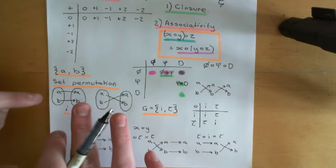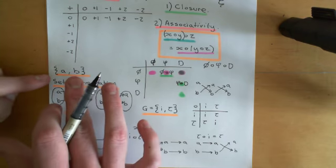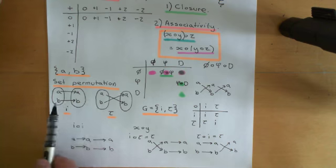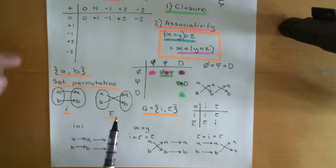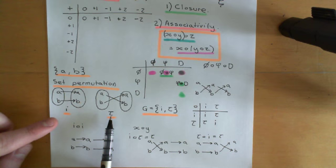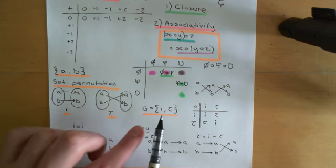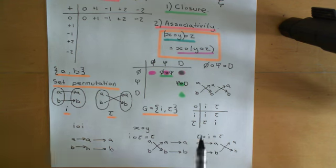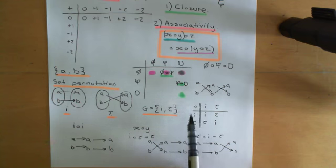To give an example, I've imagined using a set of just two elements, A and B. We've got two set permutations, which I've given names: the identity set permutation and the transposition set permutation. I've then put these two symbols into a set on their own, and this is the set I'm going to use to define the composition law.